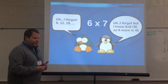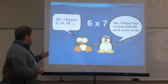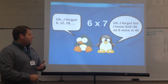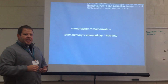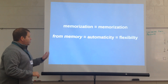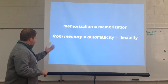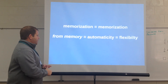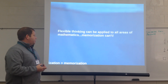The penguin on the left has learned his facts through memorization. If he forgets what 6 times 7 is, he has to go back to skip counting: 6, 12, 18. The penguin on the right, if he forgets 6 times 7, can say 6 times 6 is 36, plus 6 more is 42. Students who only used memorization have nothing else to fall back on, but a student who learned from memory has automaticity, flexibility — all because their facts were built through strategy.